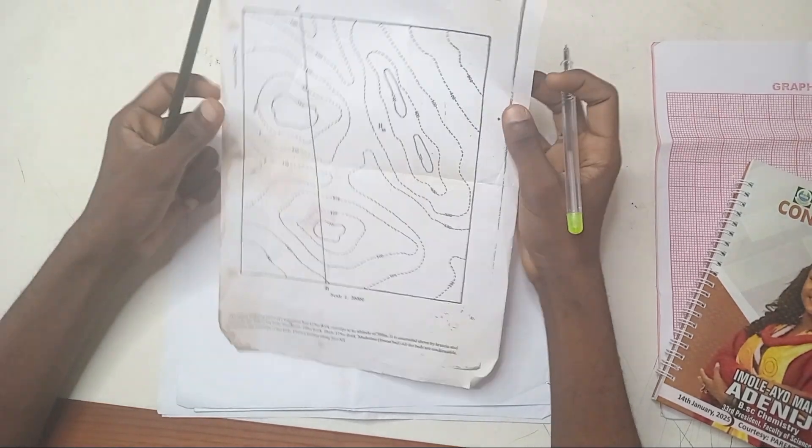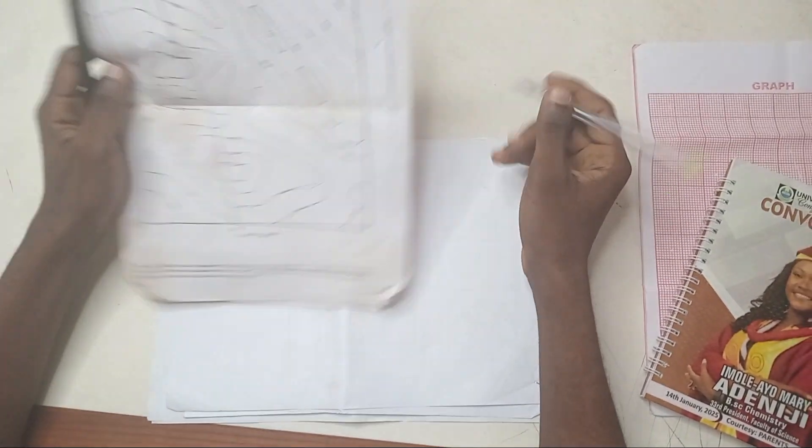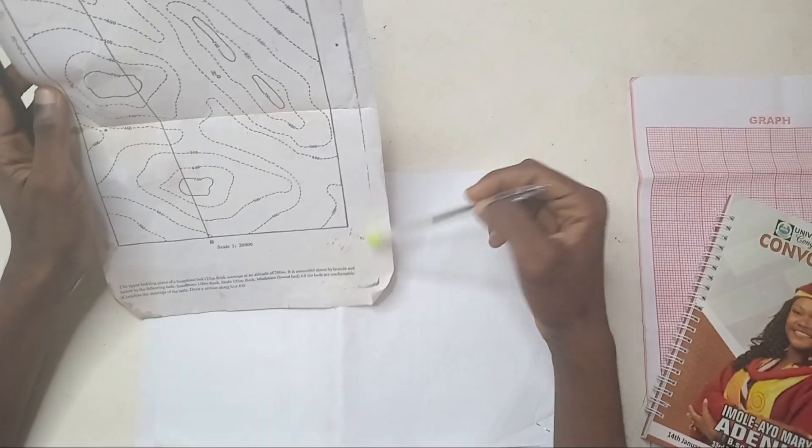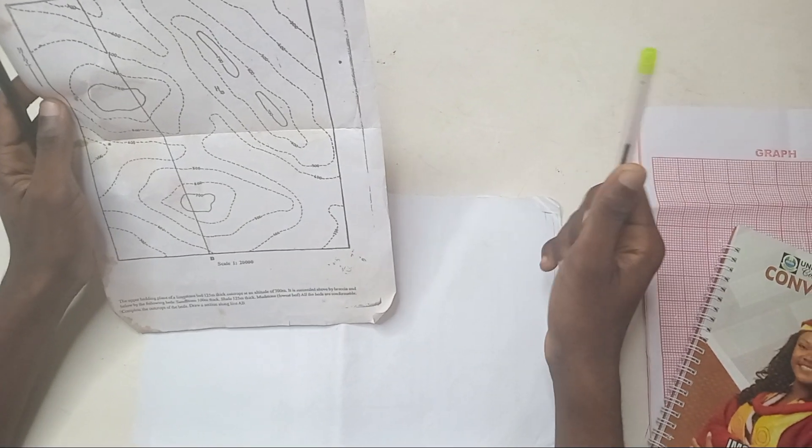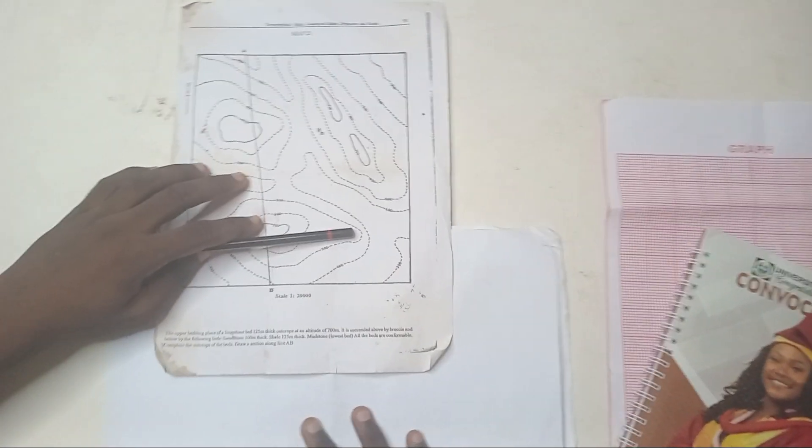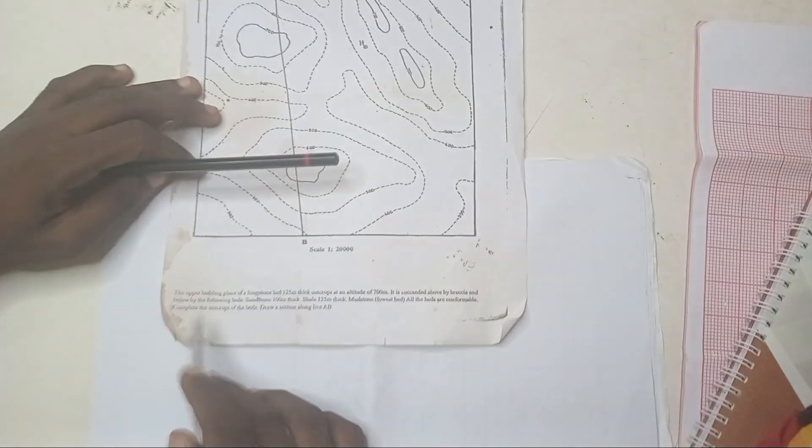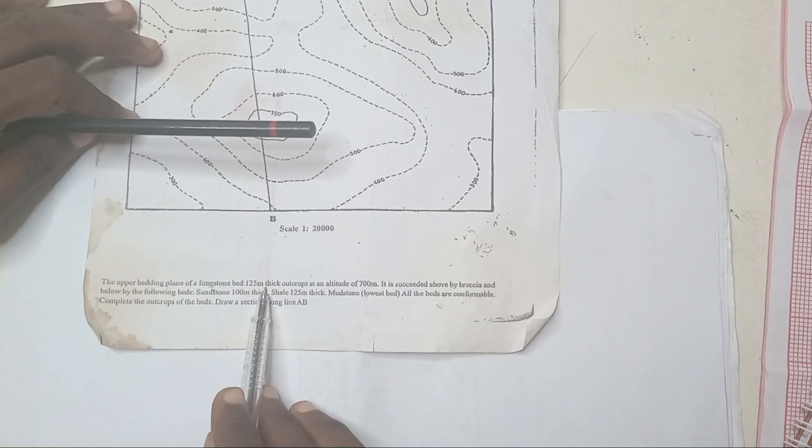Okay, our first map here is a topographical map which you are going to turn into a geological map and also draw the cross section on it. Okay, herein we have a question. It said the upper bedding plane of a limestone bed,